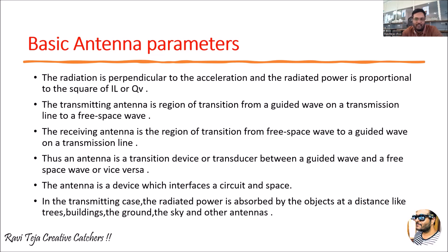As already stated, a transmitting antenna is the region where transition happens from a guided wave on a transmission line into free space. For the receiving antenna, the signal travels from free space to the guided wave on a transmission line. Therefore an antenna is a transmission device — or transducer — between a guided wave and free space, or vice versa, depending on whether it is a transmitting or receiving antenna. Simply put, an antenna is a device that interfaces between the antenna circuitry and the free space or wireless medium.